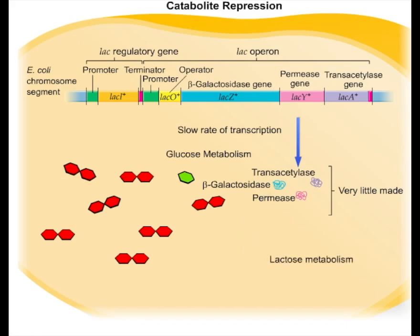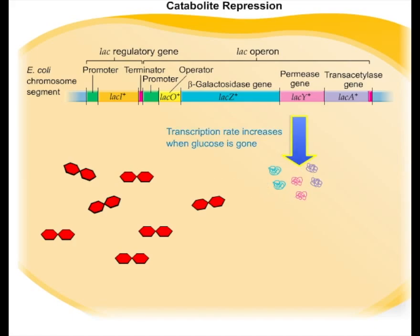Glucose effect, which functions to turn the lac operon off even though lactose is present. Only when the supply of glucose has been exhausted does E. coli increase the transcription of the lac genes and begin to metabolize lactose rapidly.